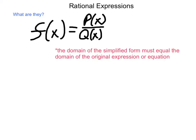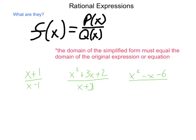Some examples of rational expressions would be like having x plus 1 divided by x minus 1. Now, this is one that cannot be simplified. Or, having x squared plus 3x plus 2, which is a quadratic trinomial, divided by x plus 3, which is a linear binomial. And, last example, x squared minus x minus 6, which again is a quadratic trinomial, divided by x squared plus x minus 2, which is another quadratic trinomial.